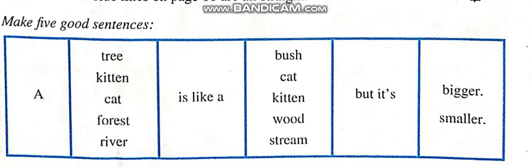It is question number 2: make 5 good sentences. We have different options to make a meaningful sentence. The sentence will compare one thing to another by giving one similarity and one difference. For example, a tree is like a...